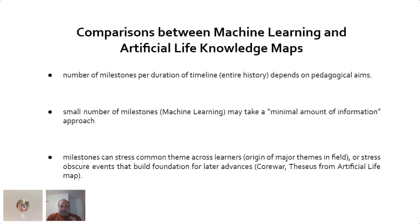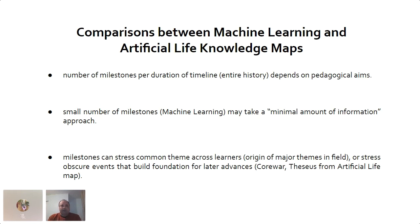A small number of milestones may take a minimal information approach, while the artificial life map takes a more inclusive approach to history. Milestones can stress common themes across learners — learners can propose different milestones or nodes into these timelines and modify them as they see fit. You can also stress obscure events that build the foundation for later advances — in the artificial life map, things like Core War and Theseus were software programs that led to later advances.